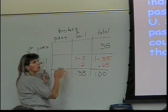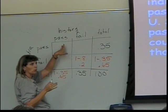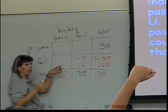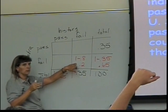These four pieces cover everything that can happen. I can pass both classes. I can pass algebra, fail history. I can fail algebra, pass history. Or I can fail both classes.